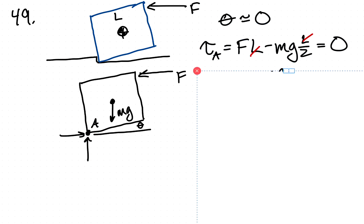So if we take moments about point A, we have a moment from this force, and the moment arm is this distance here, which is just L.